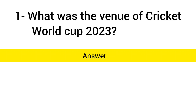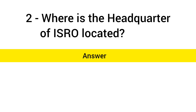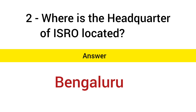What was the venue of the Cricket World Cup 2023? Answer: India. Where is the headquarters of ISRO located? Answer: Bengaluru.